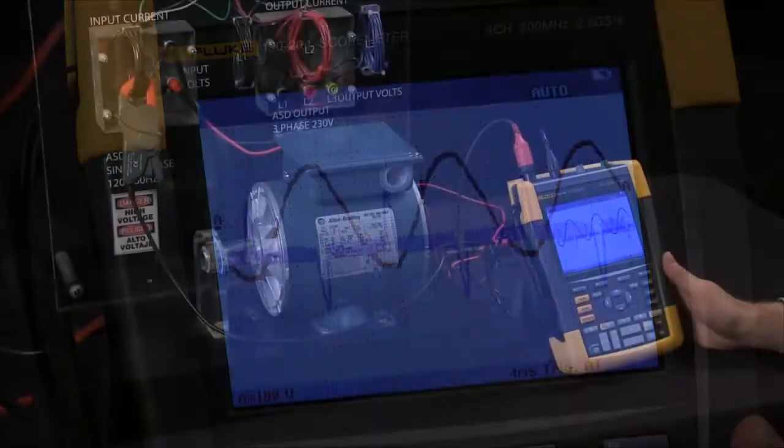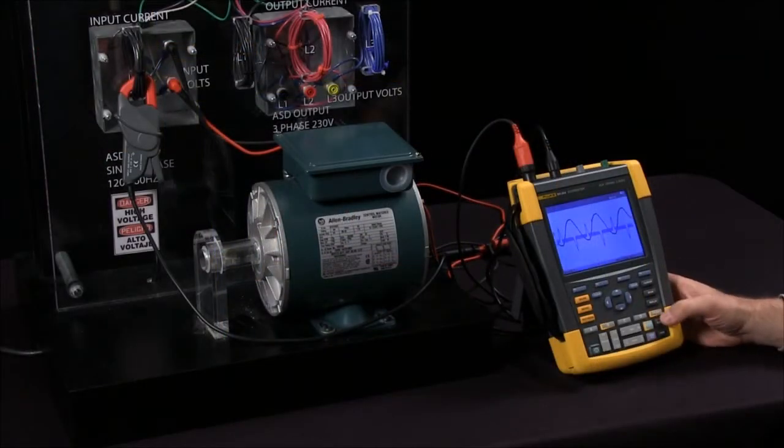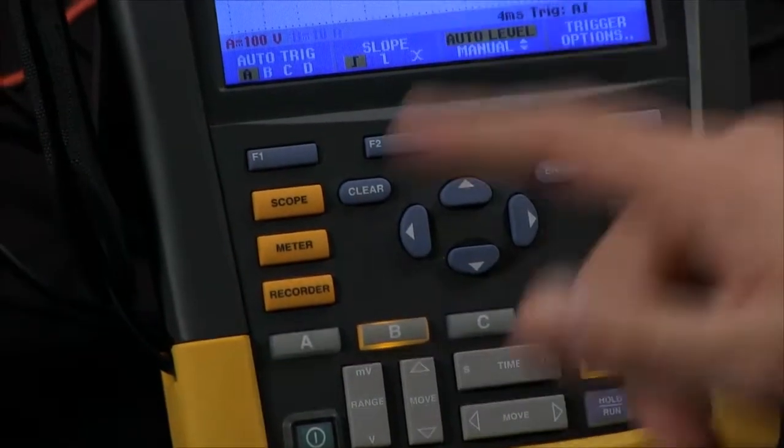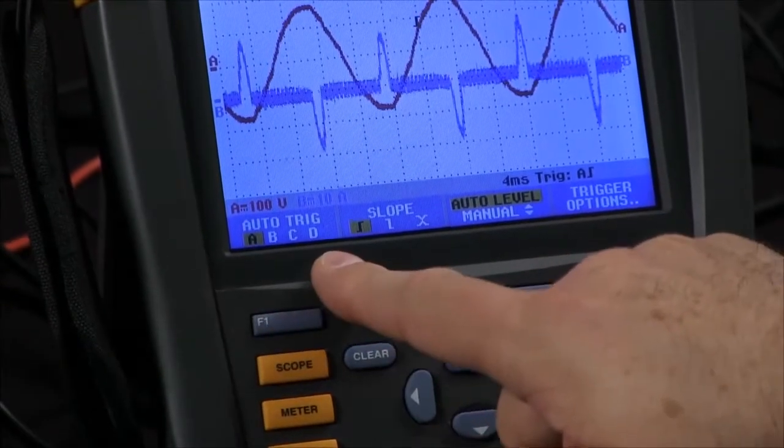If you want to go a little further and start triggering and take some additional options, you simply press the trigger button. Now you can decide on which channel you want to trigger, whether it's A, B, C, or D.